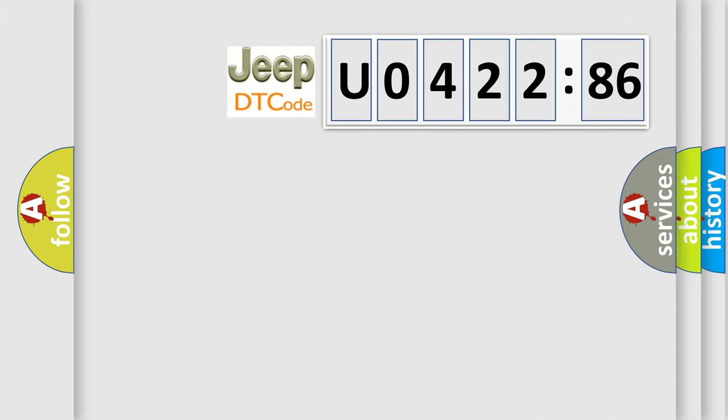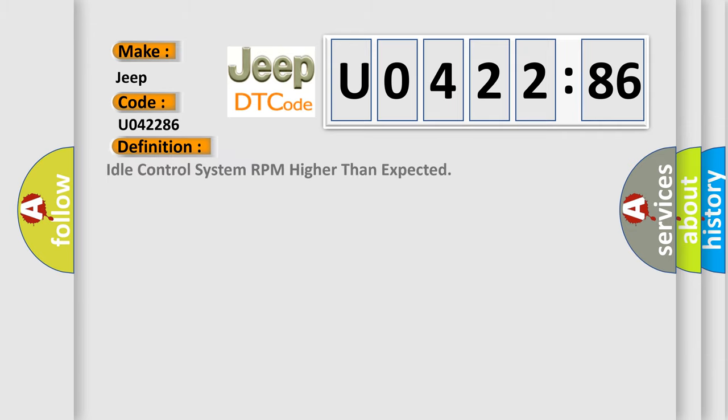So, what does the diagnostic trouble code U042286 interpret specifically for Jeep car manufacturers? The basic definition is: idle control system RPM higher than expected.